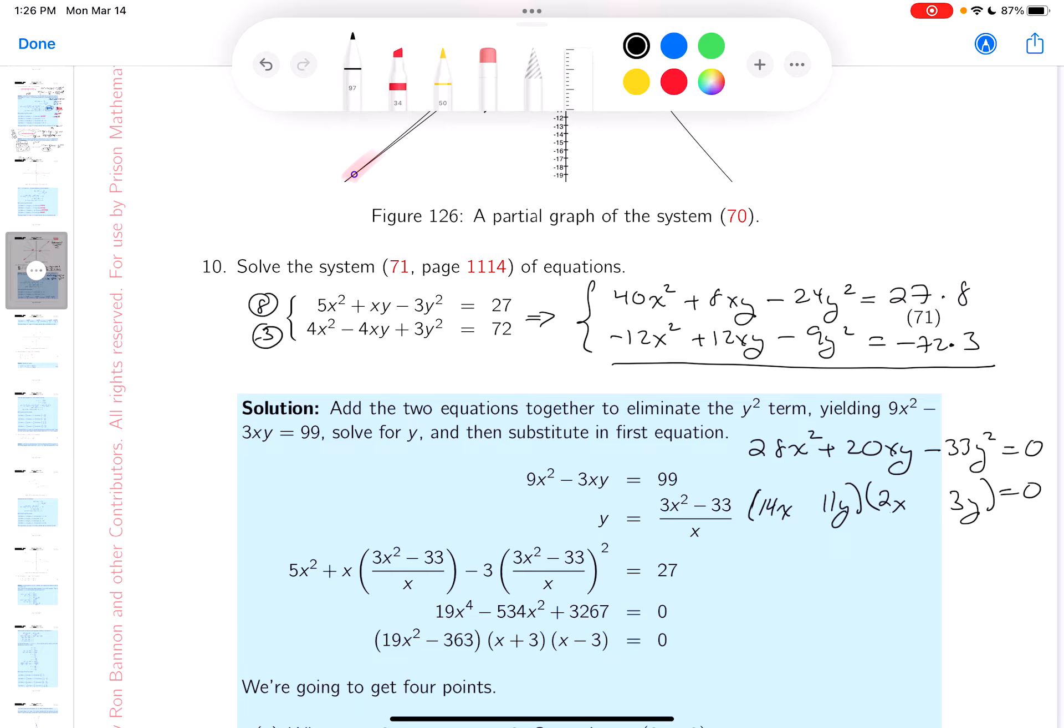So what do you get there? Well, you get 28x². Certainly, I didn't put signs in yet, by the way. 33y², 14 times 3 is 30 and 12, 42. And then 11 times 2 is 22, right?